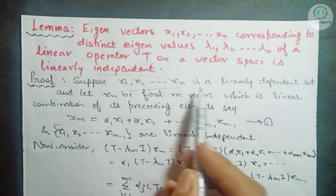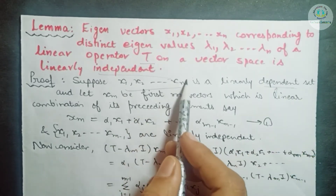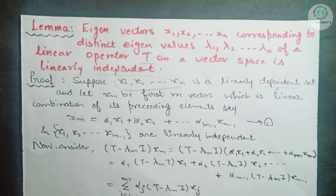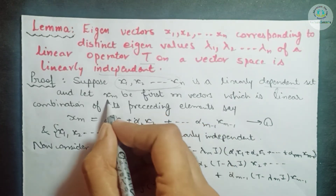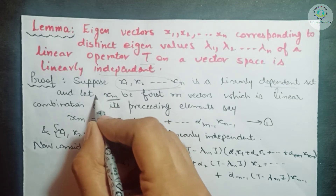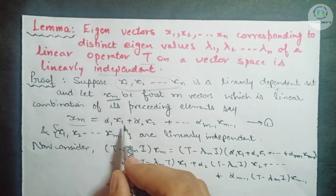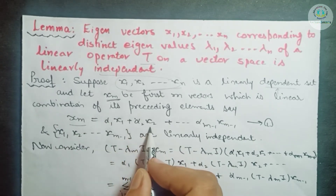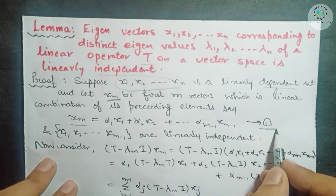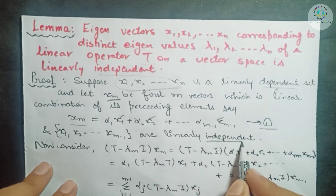For the proof, suppose these vectors are linearly dependent. If we have a linearly dependent set, then by a standard result, one of the vectors can be written as a linear combination of its preceding vectors. So we can write xm = α1·x1 + α2·x2 + ... + αₘ₋₁·xₘ₋₁. Give it number 1. And the vectors x1, x2, ..., xₘ₋₁ are all linearly independent.